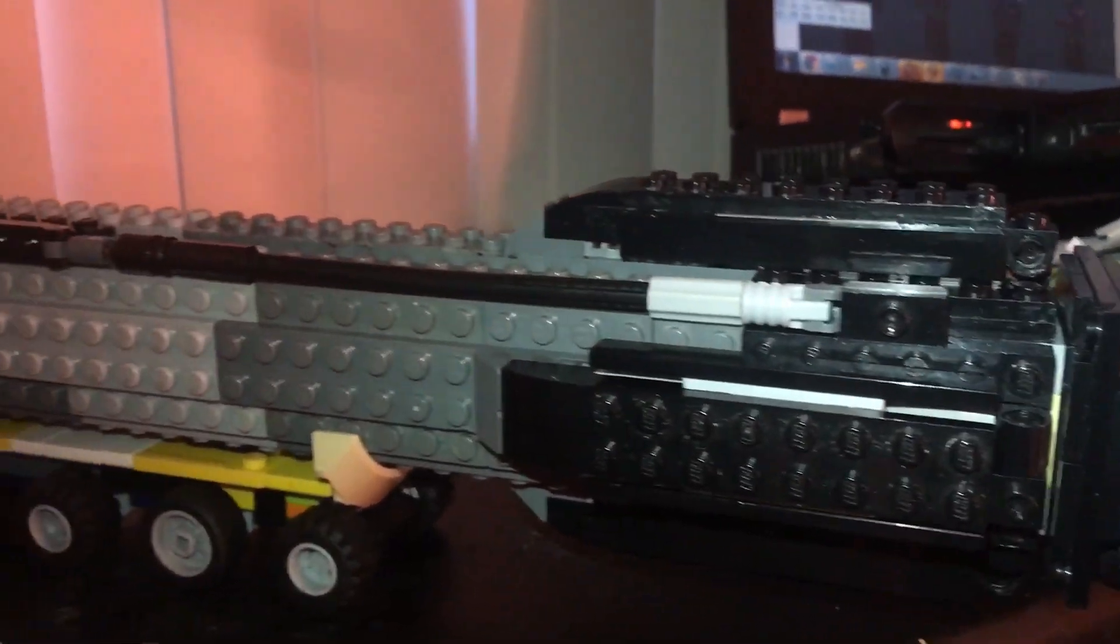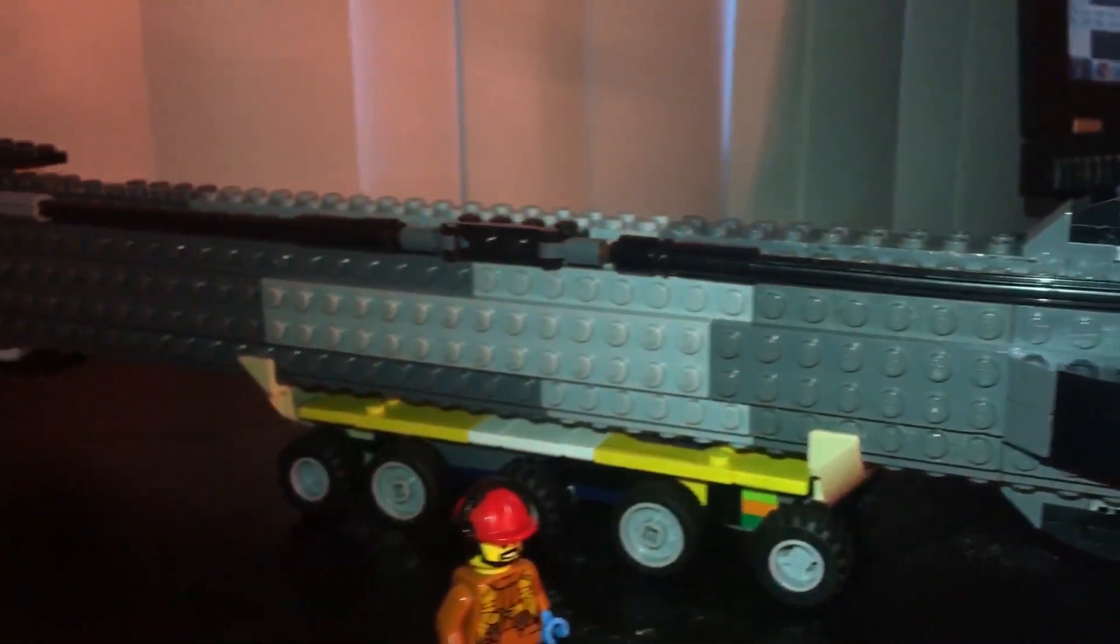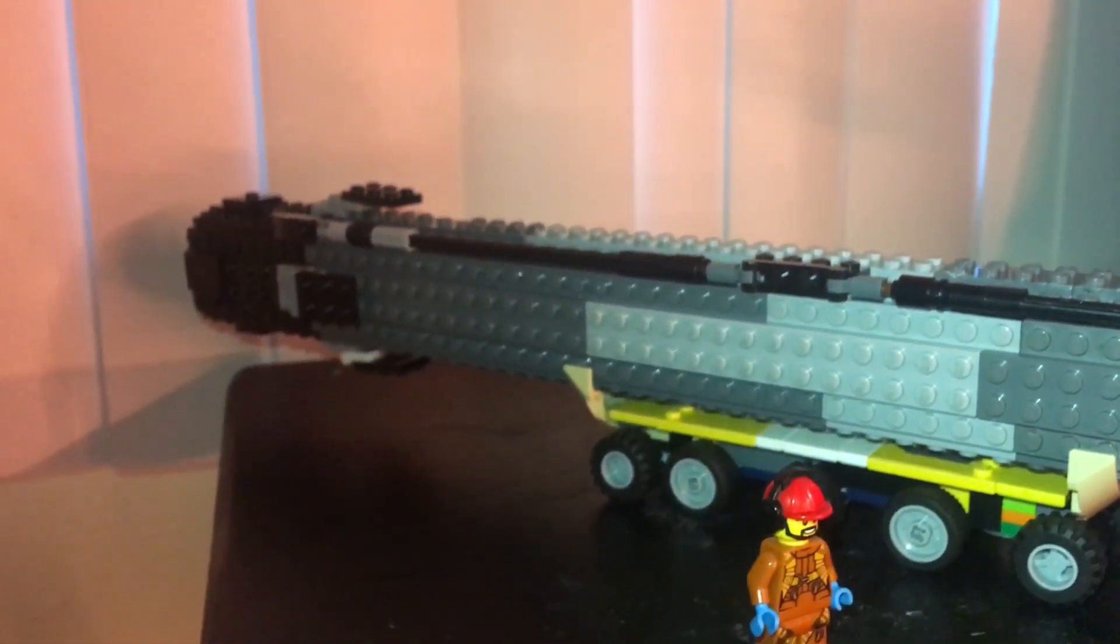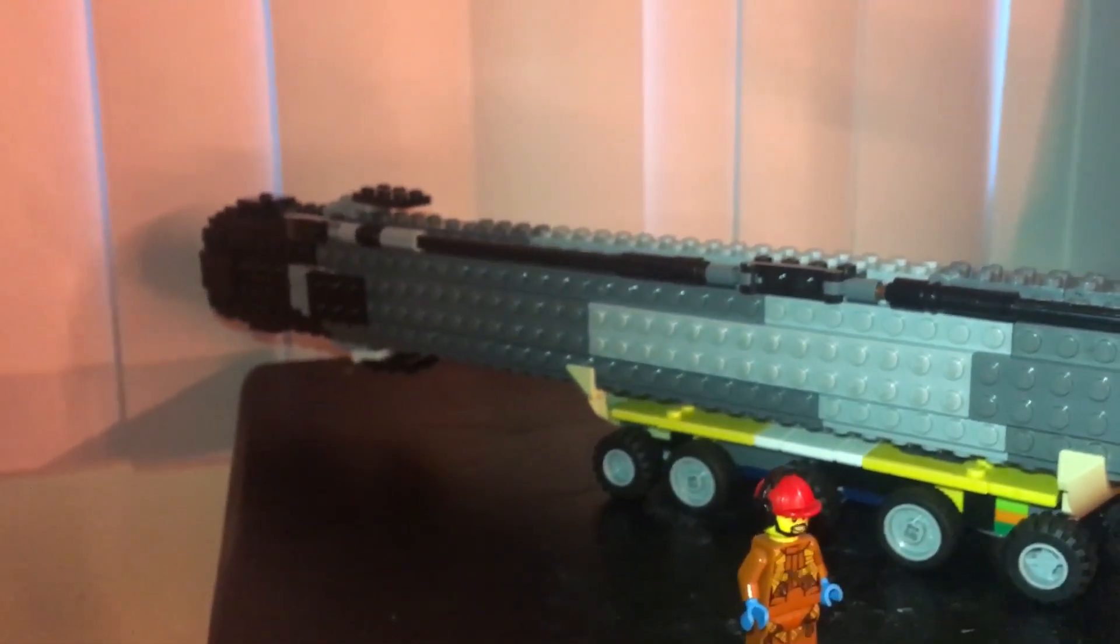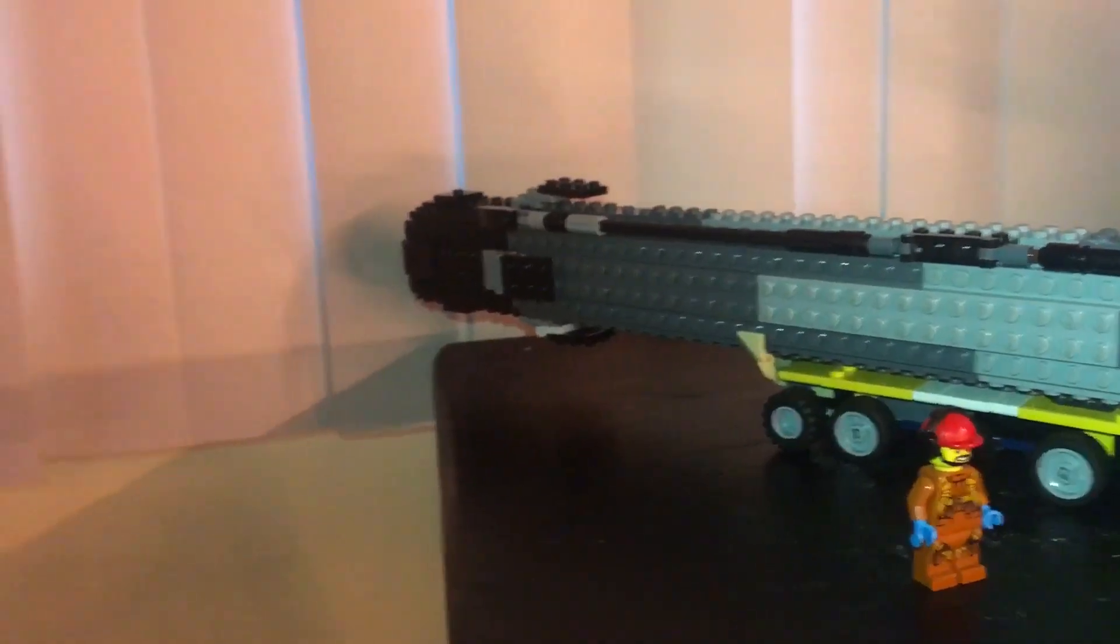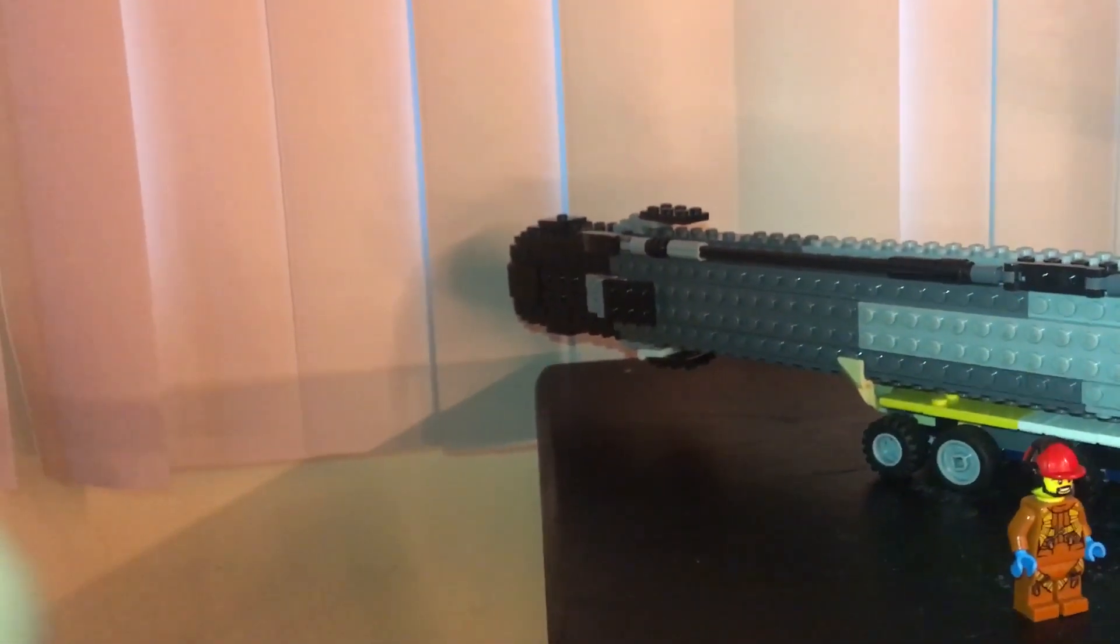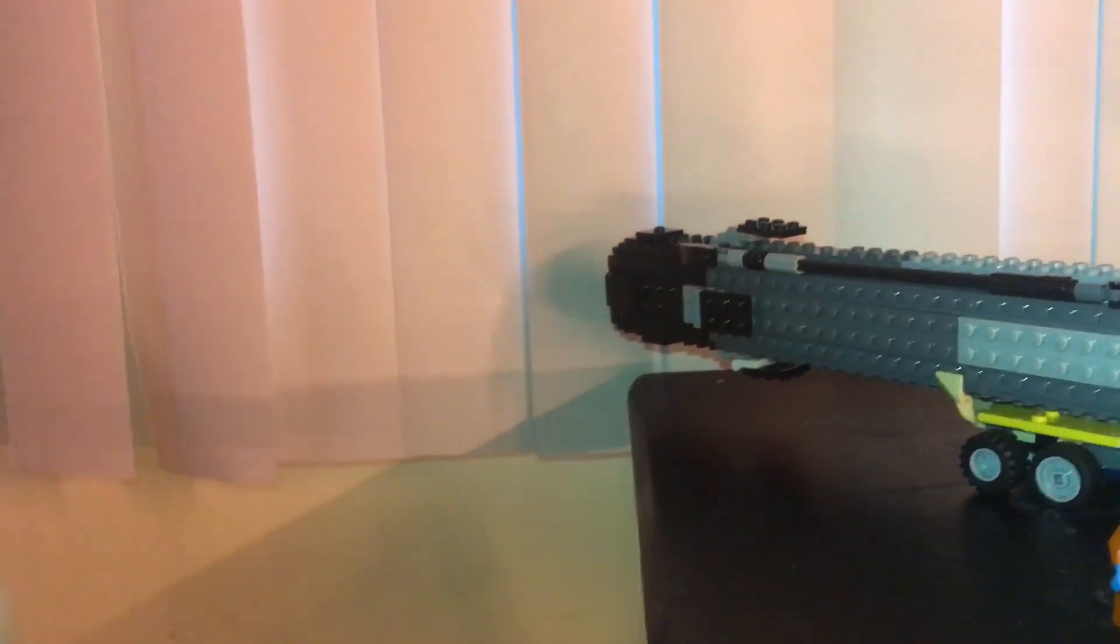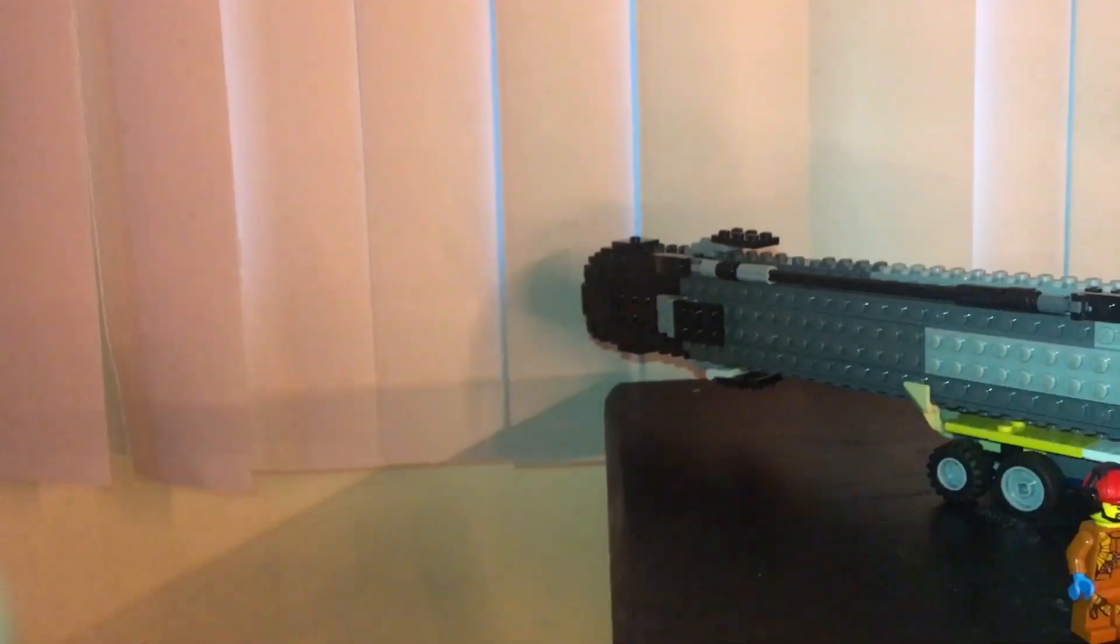Running along the length of Falcon 9 is the raceway. This raceway transports plumbing and electrical lines up and down the rocket. And then looking forward, we can see the four grid fins, one on each side, followed by the interstage. Let's take a closer look inside the interstage.